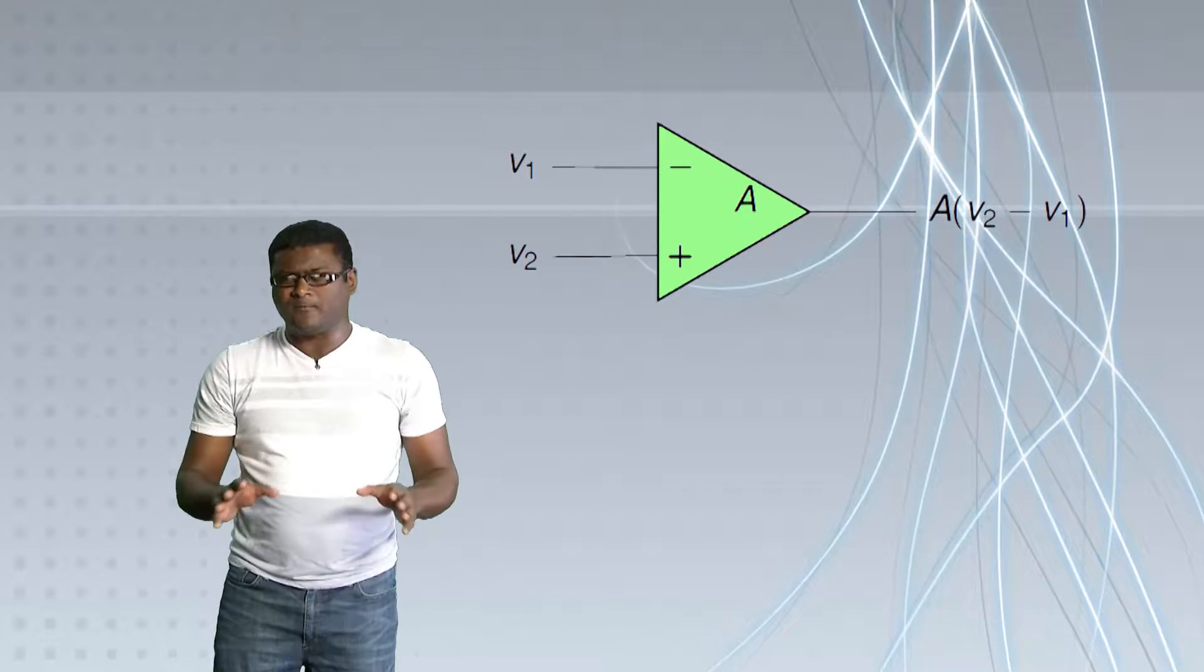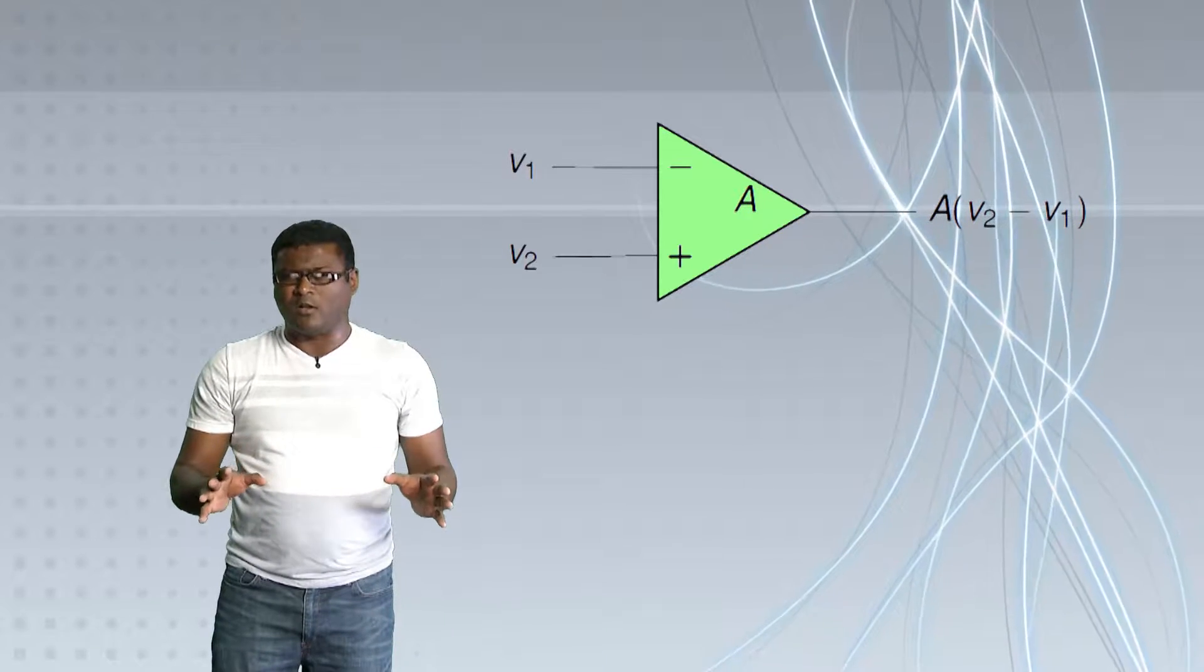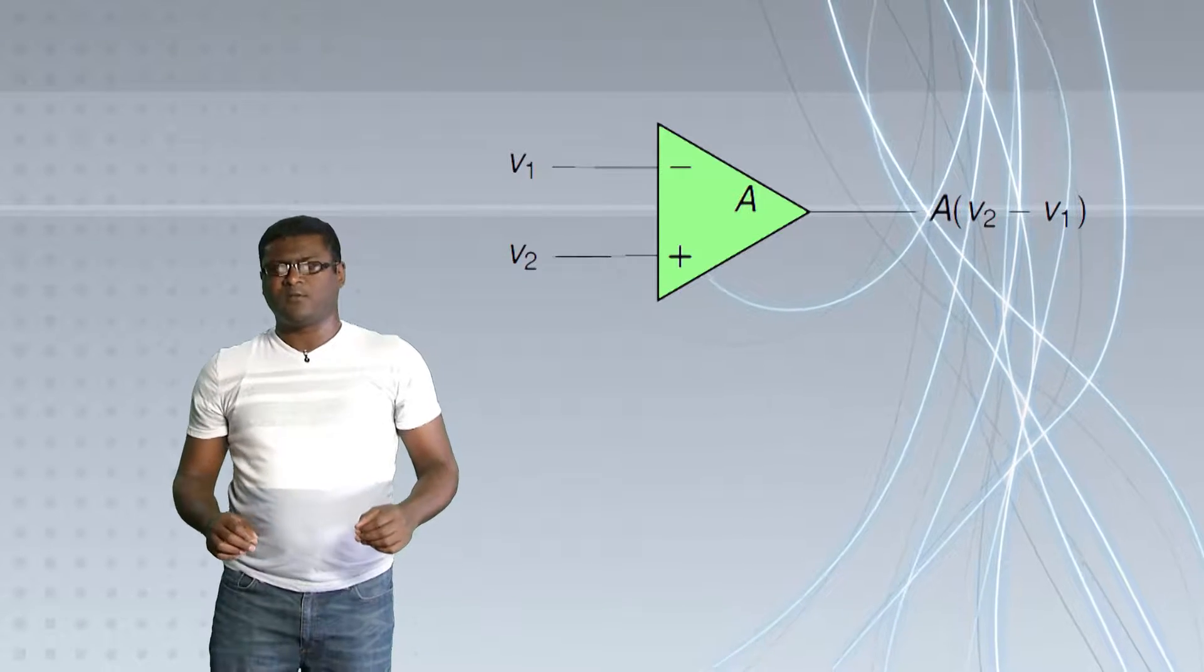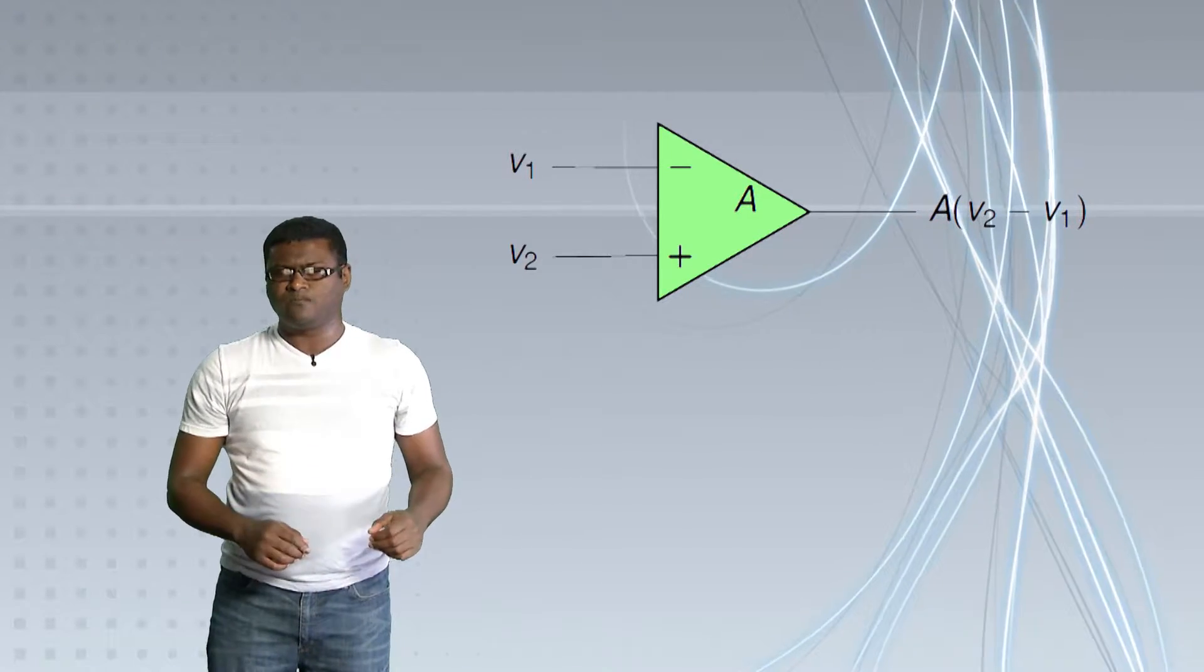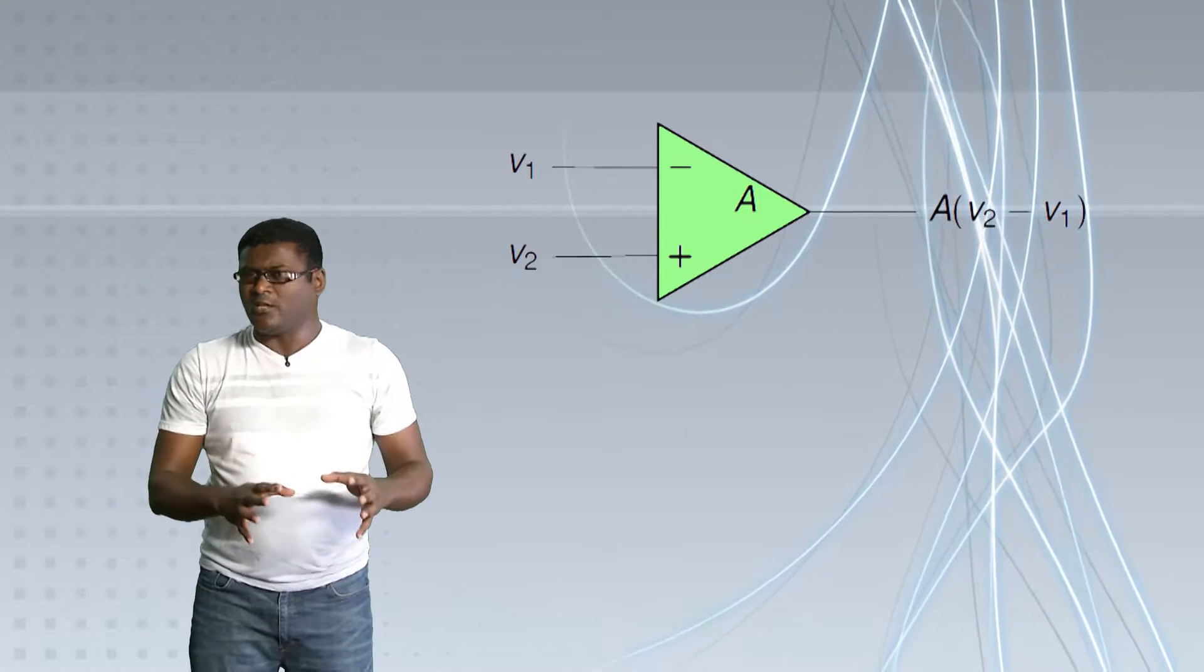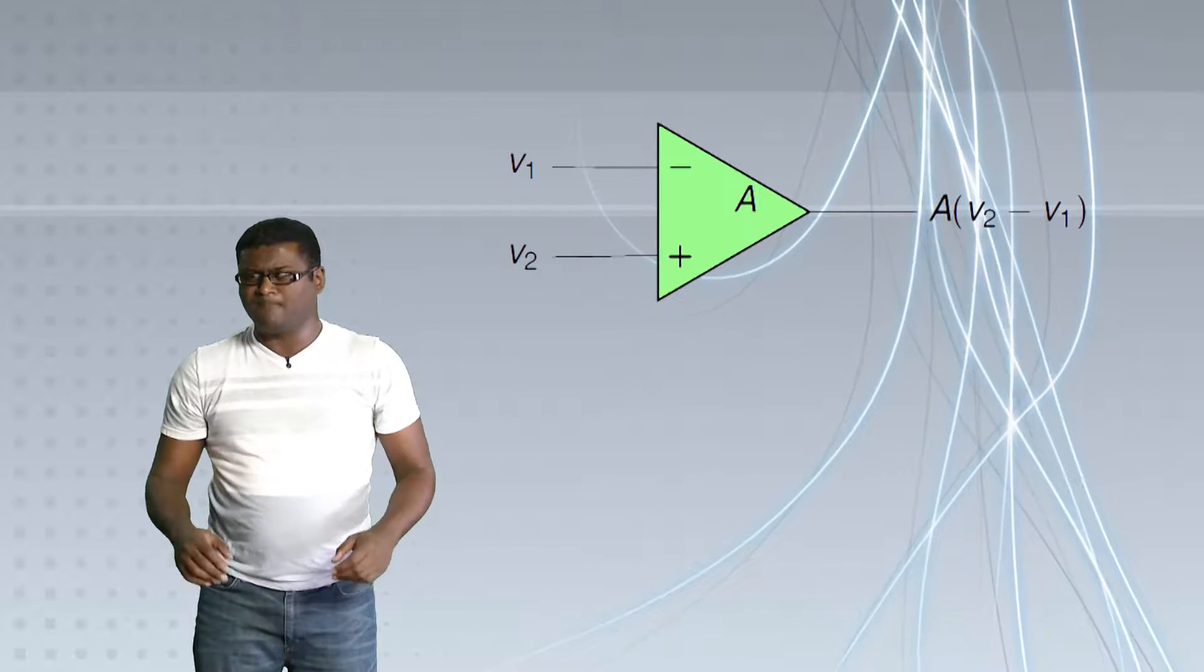At the most fundamental level, an op amp is what is called a difference amplifier. That means it has two inputs, V1 and V2, and a single output, which is A times V2 minus V1.